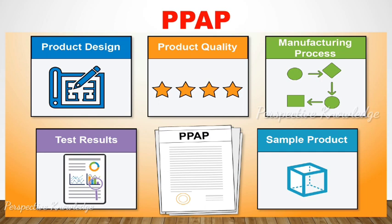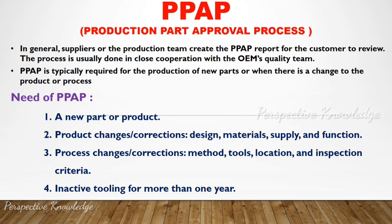The main steps of PPAP are: product design, product quality, manufacturing process, test results, and sample products. In general, suppliers create PPAP reports for the customer to review. The process is usually done in close cooperation with the OEM's quality team. PPAP is typically required for the production of new parts or when there is a change to the product or process.